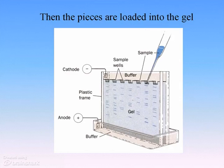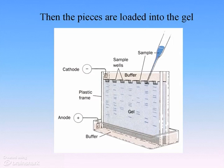So we take that sample of DNA, which is now cut up into a whole bunch of fragments, and we put that in one of these sample wells. And if we're comparing the DNA of different organisms or different individuals, each well would have one individual's DNA cut by the same restriction enzyme.